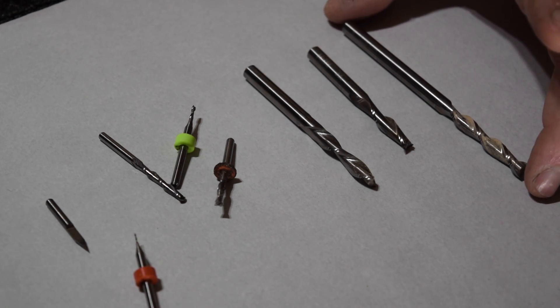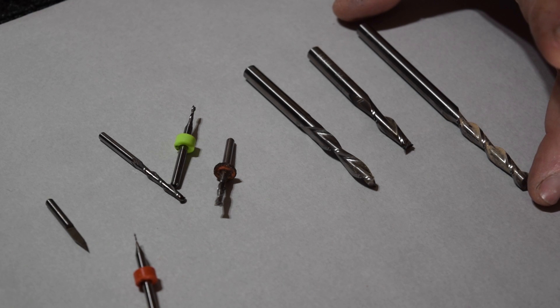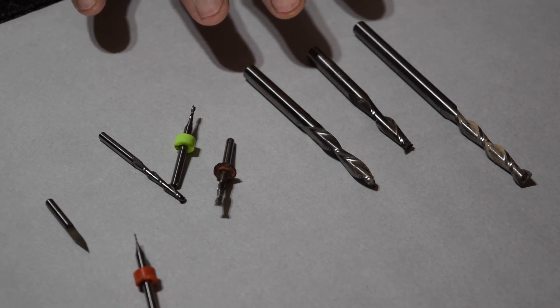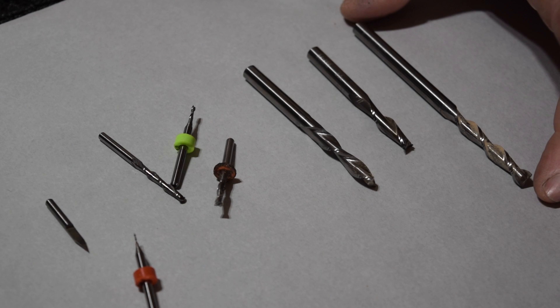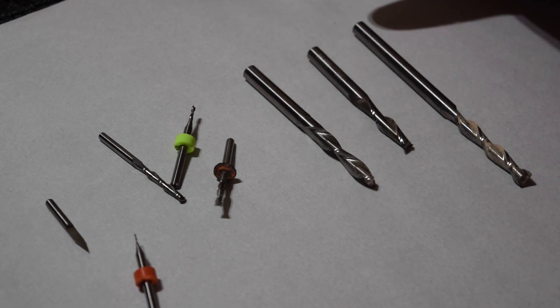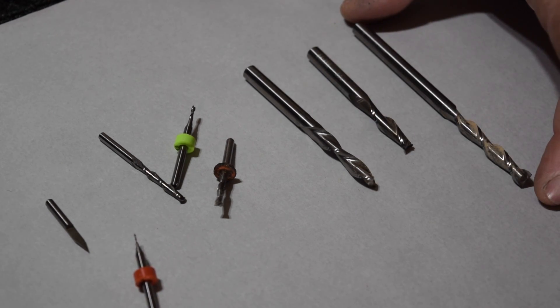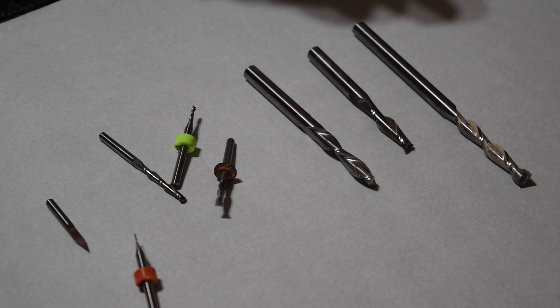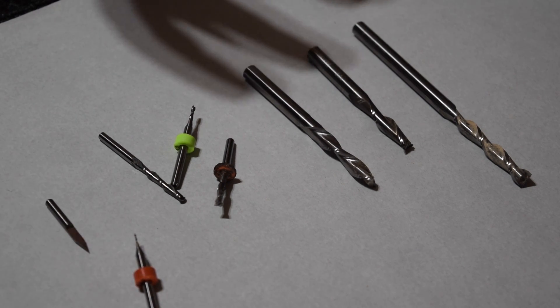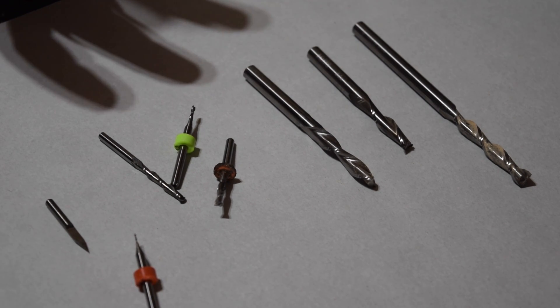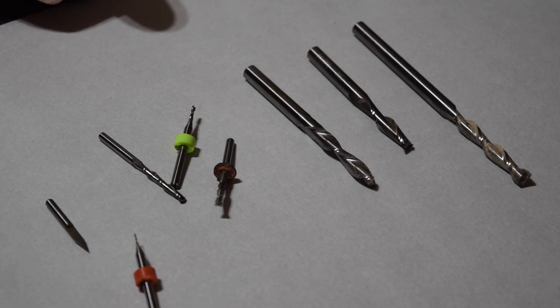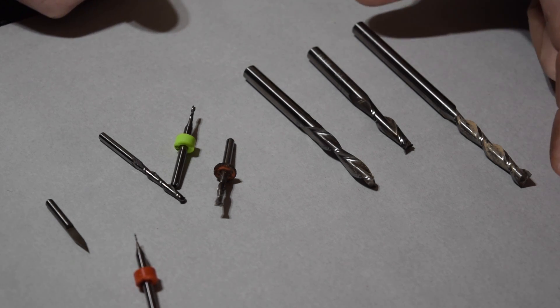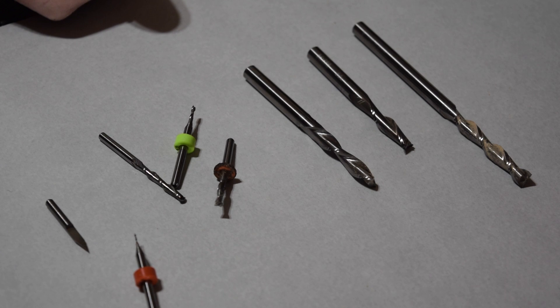These are quarter inch diameter two flute bits and the reason I have three of them is because they're slightly different. Obviously this one's longer than the other two. This is a bit that I use when I cut out the contour shape of a guitar.